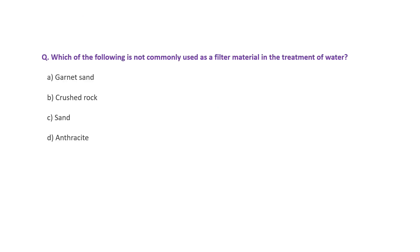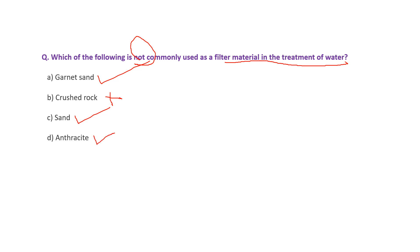Question ten: Which of the following is not commonly used as a filter material in wastewater treatment? Garnet sand, sand, and anthracite are used for wastewater treatment. Crushed rock is not used for the treatment of wastewater. So B — crushed rock — is the right answer.